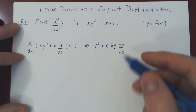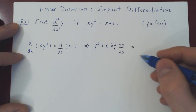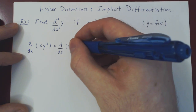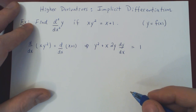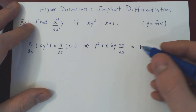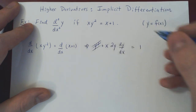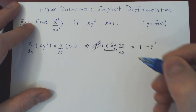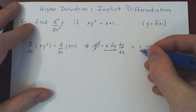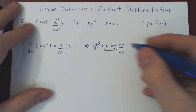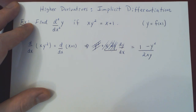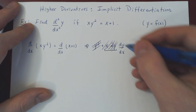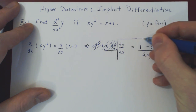The derivative of the left-hand side equals the derivative of the right-hand side, which is 1. Now let's solve for dy/dx: subtract y² on both sides, then divide both sides by 2xy, and we have isolated dy/dx as (1 minus y²) over 2xy. So we have our first derivative.